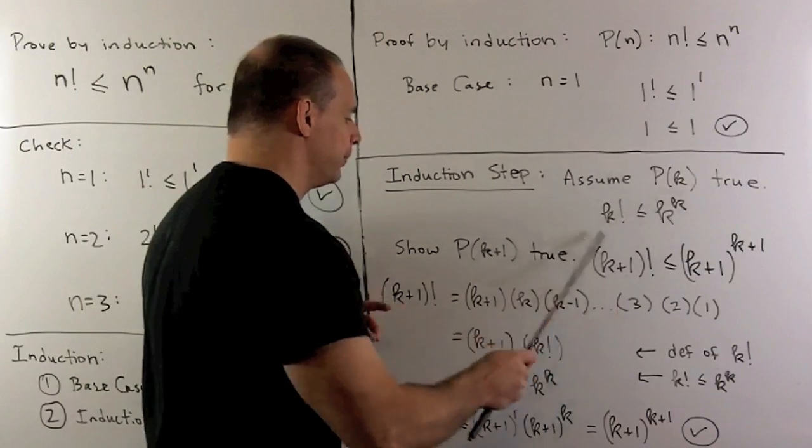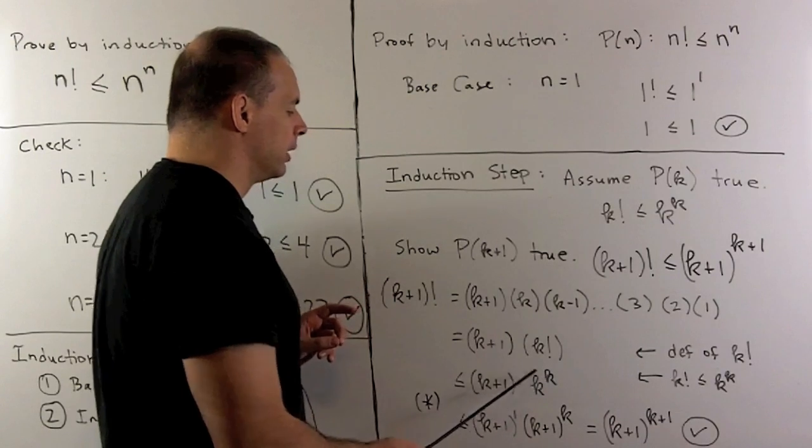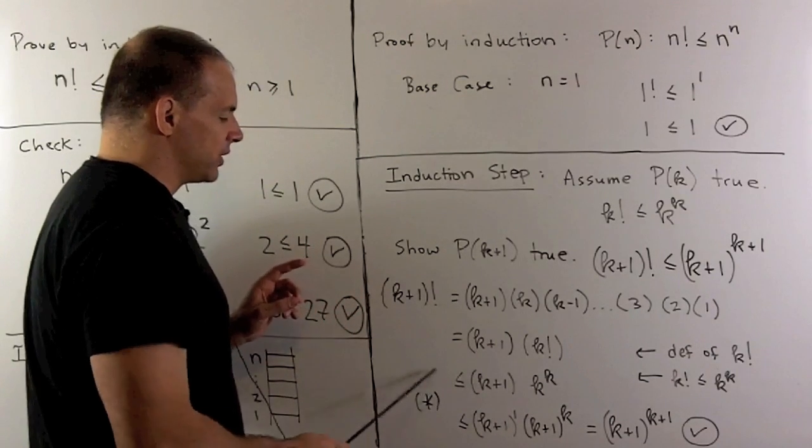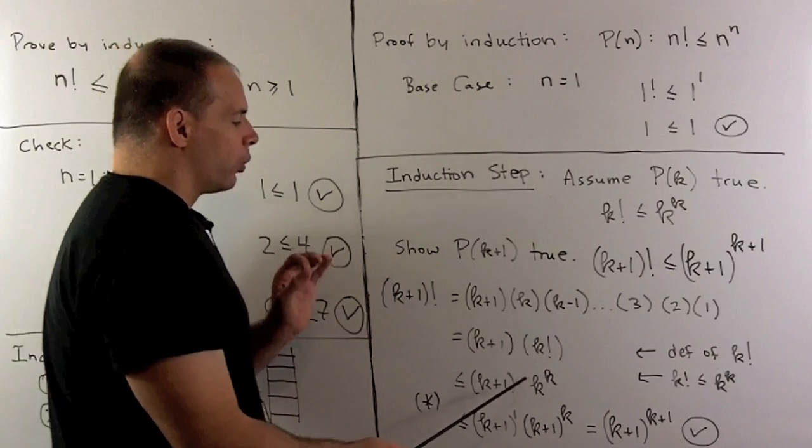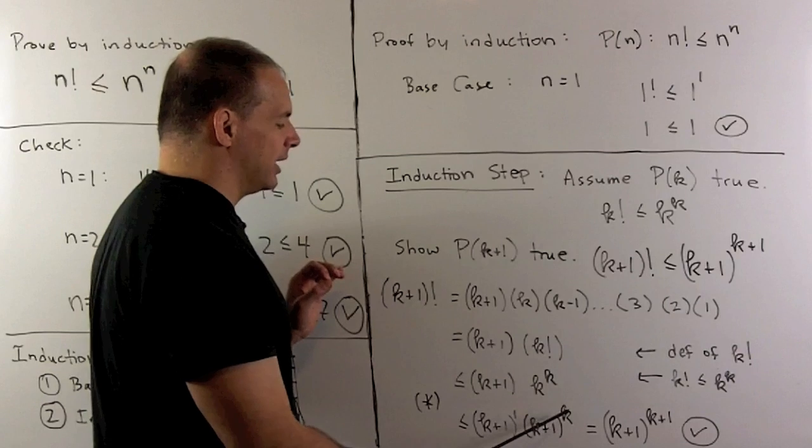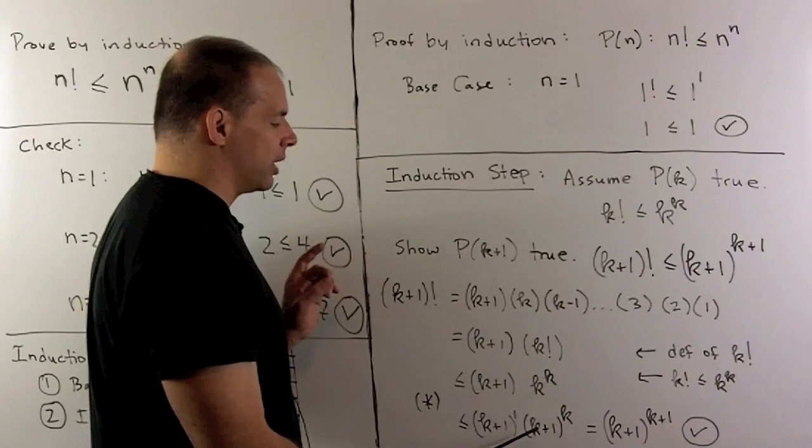Then by our assumption, k factorial is less than k to the kth power. So we'll have a less than or equals here. Then, I'll show the step on the next board. We're going to have k to the kth power is less than or equal to k plus 1 to the kth power. Okay, that's essentially because k is less than k plus 1.